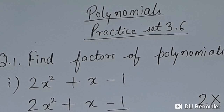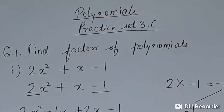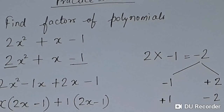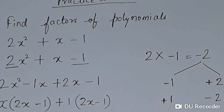What we need to do is multiply the last term by the coefficient of the first term: 2 × (-1) = -2. To get -2, there are two options: one is (-1) and (+2) — multiplied gives -2 — and the other is (+1) and (-2) — also gives -2. When we add them: the first option (-1 + 2) gives +1, and the second option (+1 + (-2)) gives -1.